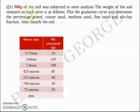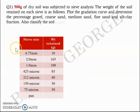500 grams of dry soil was subjected to sieve analysis. The weight of the soil retained on each sieve is as follows. You're asked to plot the gradation curve and determine the percentage gravel, percentage coarse sand, percentage medium sand, fine sand, silt and clay fractions. Also, you're asked to classify the soil. You're given a set of sieves starting from 4.75 mm up to 74 micron and then the pan, and the weight retained on each sieve is given.